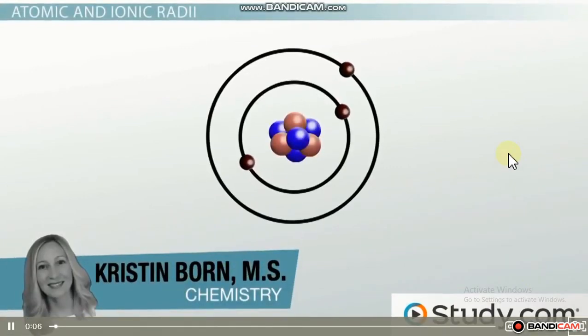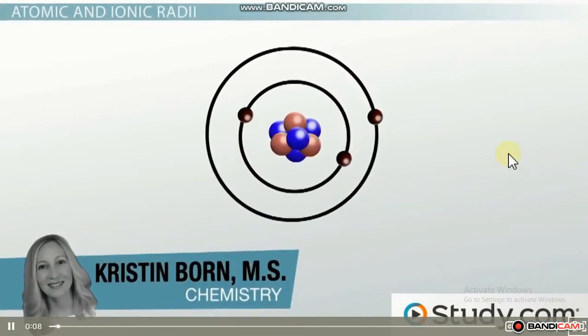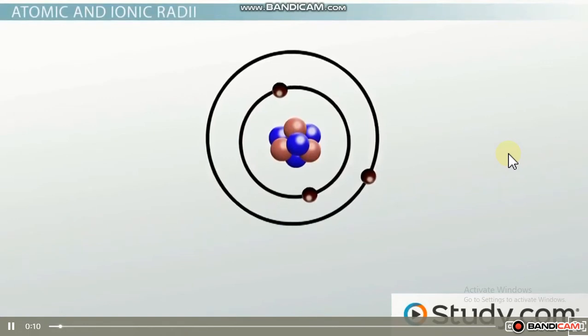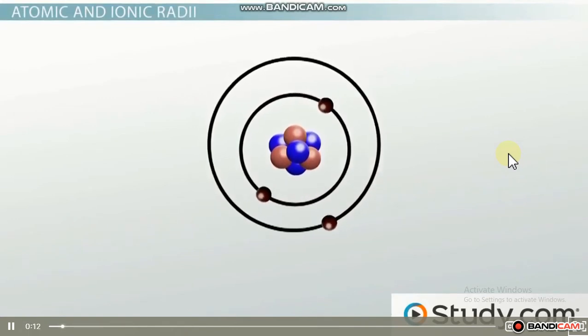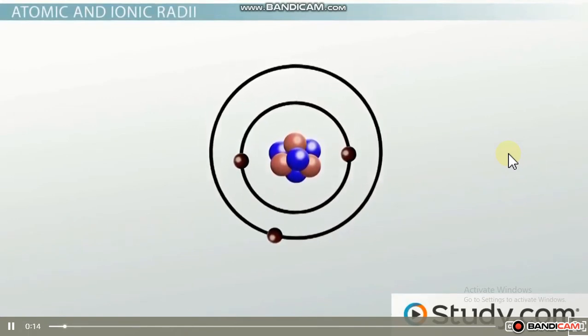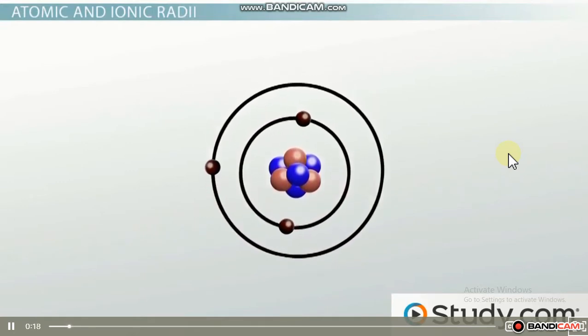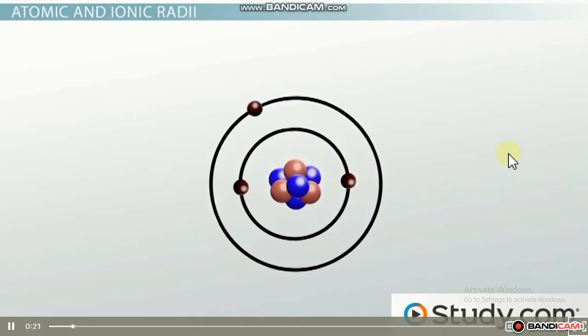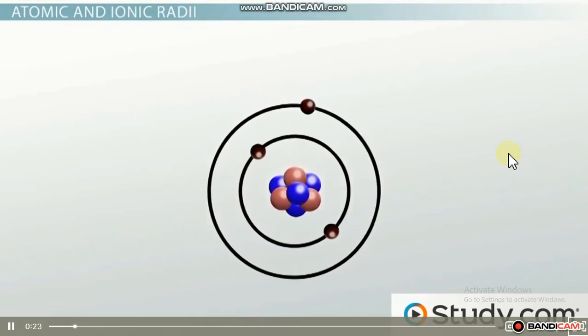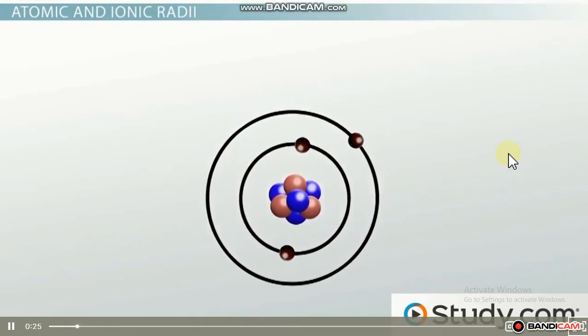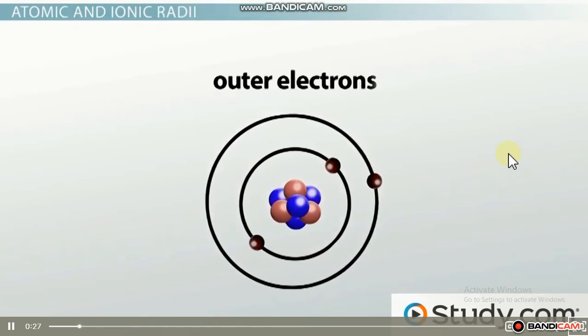When you picture an atom, you probably see a bunch of protons and neutrons crammed together in a tiny little nucleus, surrounded by a bunch of electrons zipping around the outside of the nucleus. It should make sense that the size of an atom is really dependent upon how far away the electrons are. More specifically, how far away the outer electrons, or valence electrons, are.